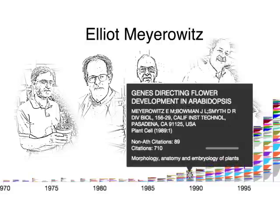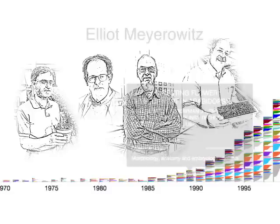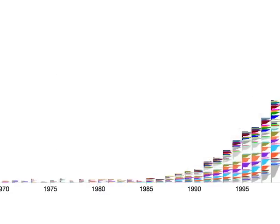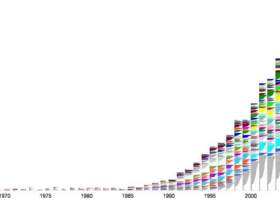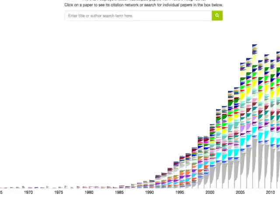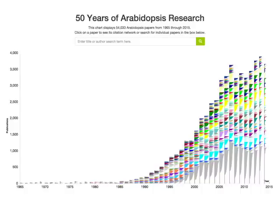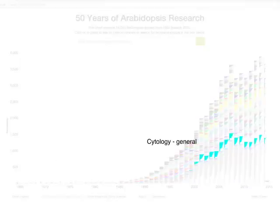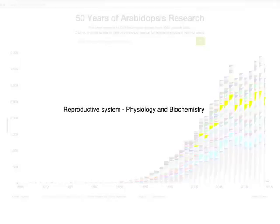...Arabidopsis research has exploded, with more than 54,000 publications covering 406 different fields such as enzymes, cytology, the reproductive system of plants, and others.